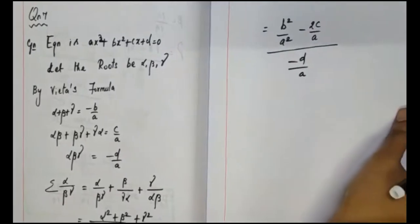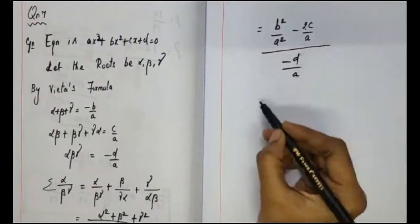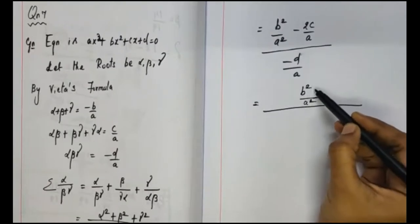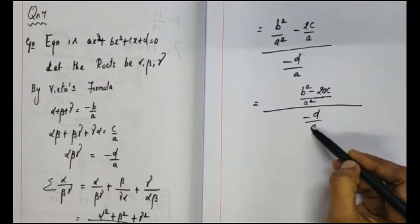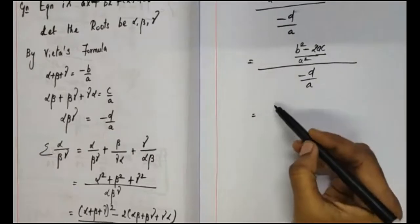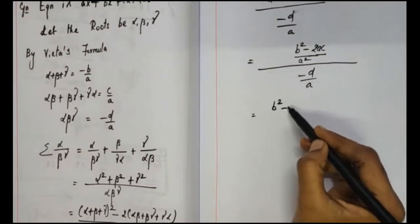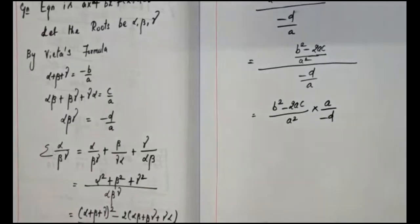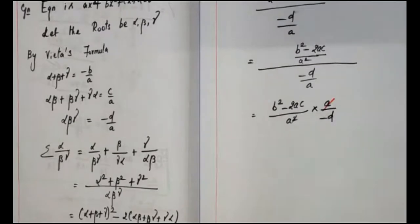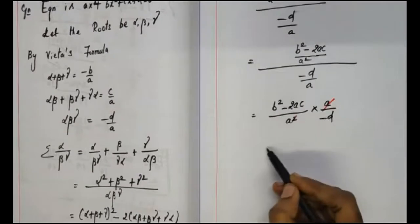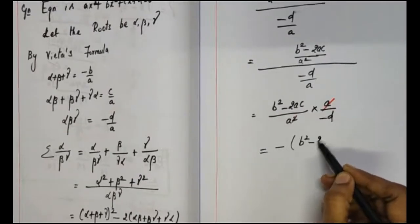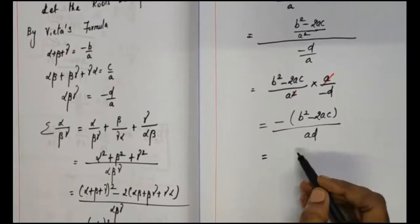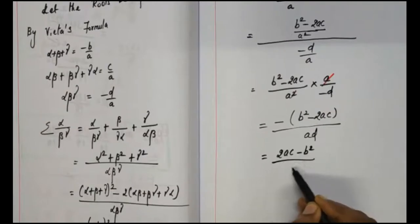Take LCM for this numerator. The LCM is a squared. So first term is b squared, the second term is two times ac. The denominator is minus d by a. In the division, multiply: b squared minus 2ac divided by a squared into a by minus d. This a and a get cancelled. The remaining term: minus of b squared minus 2ac by ad, which equals 2ac minus b squared by ad. This is the required result.